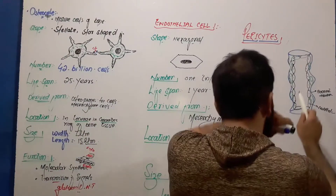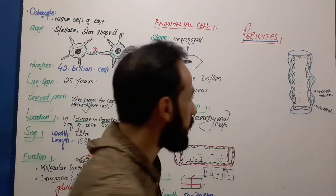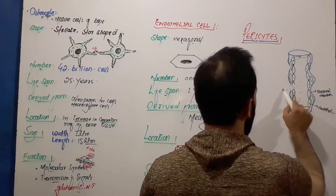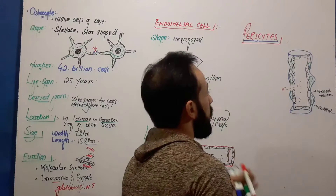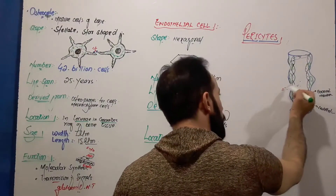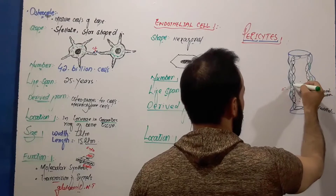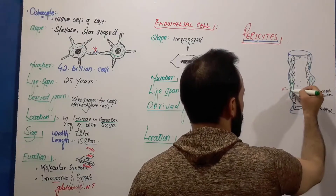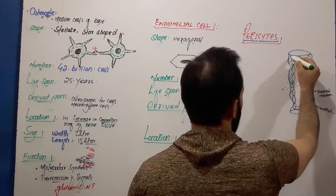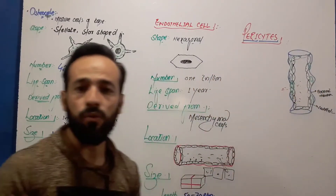Whenever there are substances damaging the endothelial cells, or whenever there is a tear in the blood vessel and blood is oozing out, these pericytes will quickly migrate to that area, close the open blood vessel, mitotically reproduce, fill the area, and prevent the blood from oozing out.